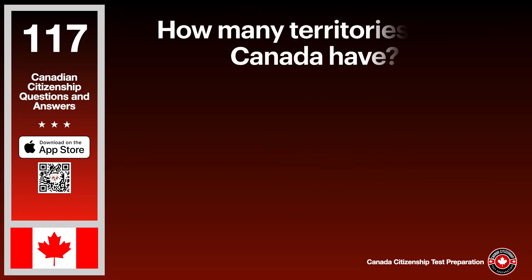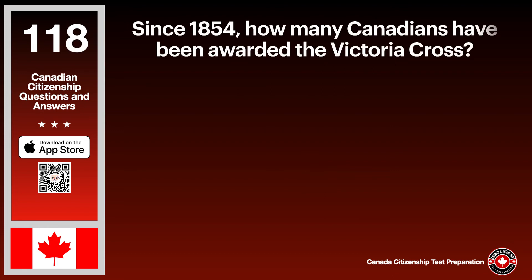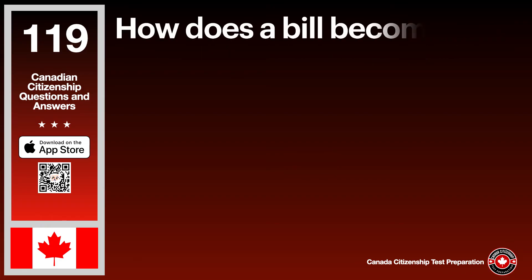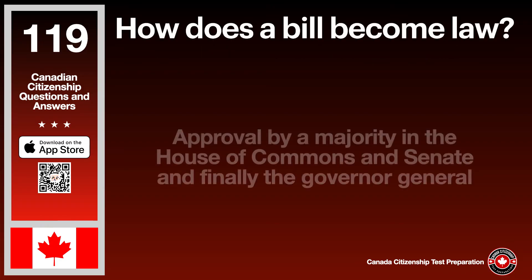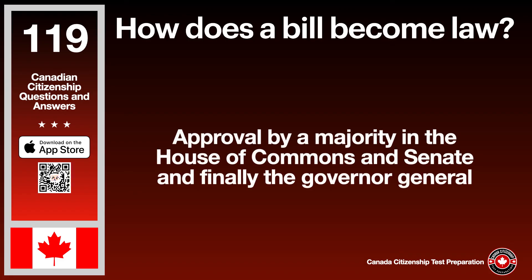Which is Canada's largest city and main financial centre? The answer is Toronto. People from which country played a significant role in the building of the Canadian Pacific Railway? The answer is China. How many territories does Canada have? The answer is 3. Since 1854, how many Canadians have been awarded the Victoria Cross? The answer is 96. How does a bill become law? The answer is by approval of a majority in the House of Commons and Senate, and finally the Governor General.